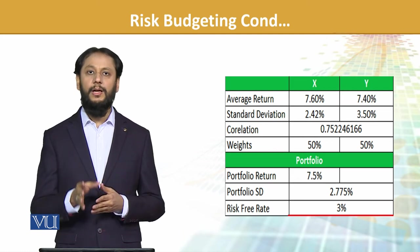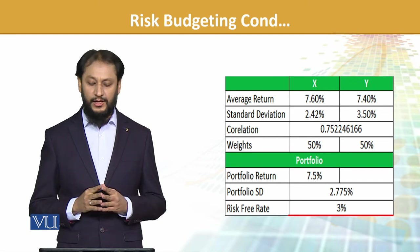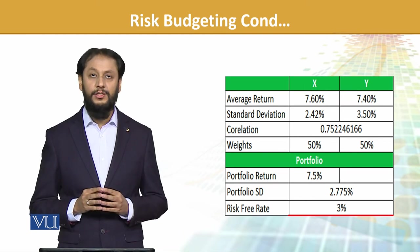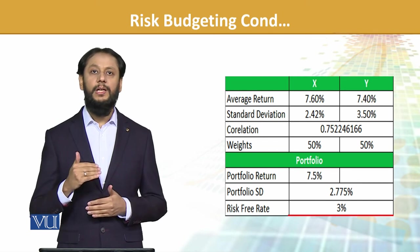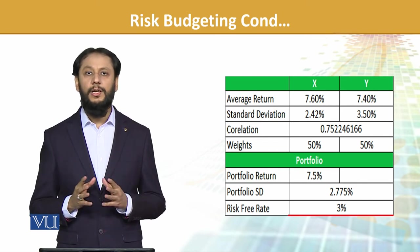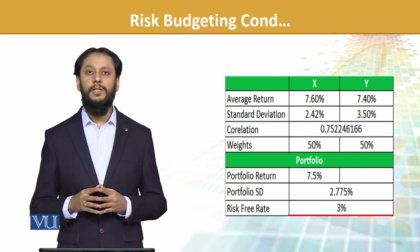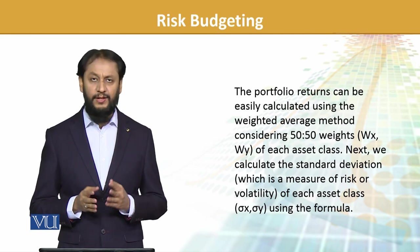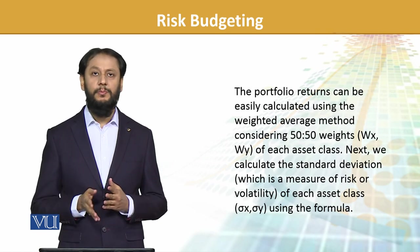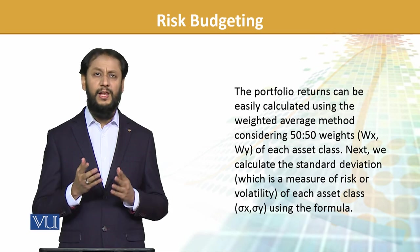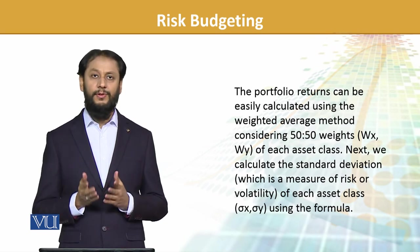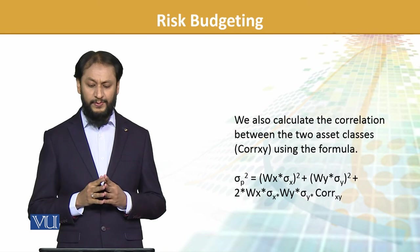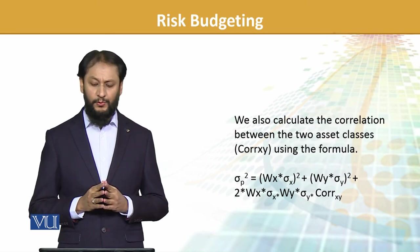We have weights, and from that we calculate portfolio returns as well as portfolio standard deviation, along with the risk-free rate. Some output figures and data have been provided so you have a clear understanding of what we are talking about, specifically with respect to risk budgeting. The portfolio return can easily be calculated — there is no difficult part there. We take the 50-50 percent weights, multiply with the returns, and calculate. Next we calculate the standard deviation, which is a measure of risk and volatility, for each asset class using the standard deviation formula, and we also calculate the correlation between the two assets.